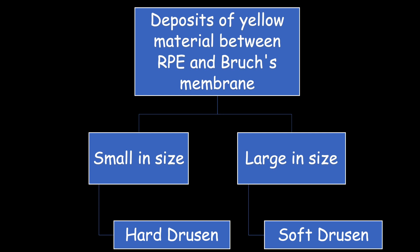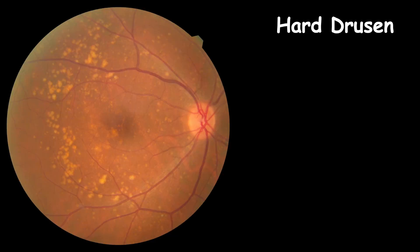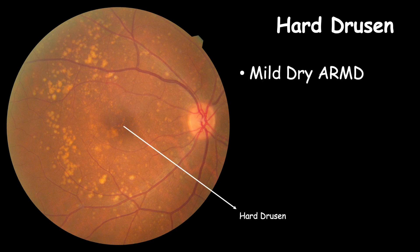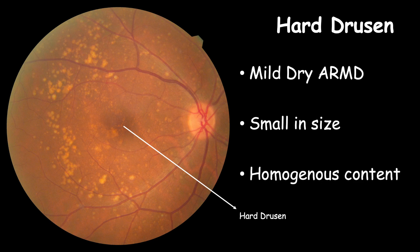Drusen can be classified by size. Hard drusen are small, and when they enlarge in size or coalesce, they form soft drusen. Hard drusen are a sign of mild dry AMD — they are small in size, with defined edges and homogeneous content.